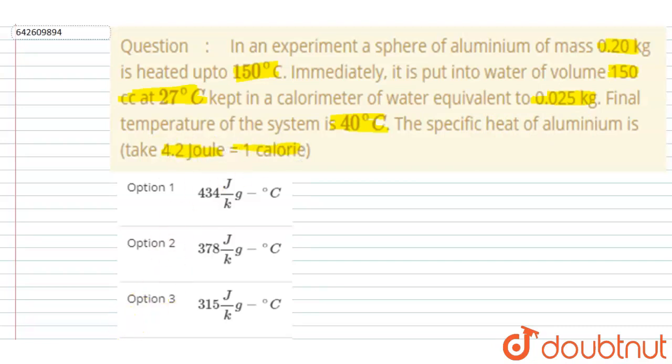So here the final temperature is 40 degrees Celsius. The heat given by the aluminum will be equal to the heat received by the water with calorimeter. So let's try this.